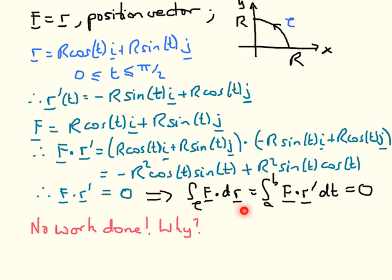Therefore the line integral of the vector field, which can be written as this integral, vanishes because the integrand is 0. In terms of this being a force field, moving an object through this path, no work whatsoever is done. We can understand why: at all stages the force field F points in a radial direction, which is at right angles to the path taken. So the scalar product is 0 — there is no component of the force field along the path, so no work is done.